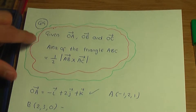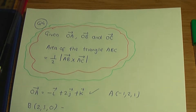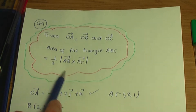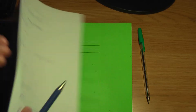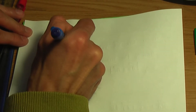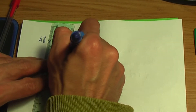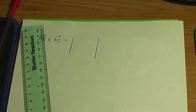Going back to our result, to work out the area of the triangle it's half the modulus of vector AB cross vector AC. Let me show you how to work out this cross product. The cross product can be found by considering the determinant of a 3 by 3 matrix. If you're unfamiliar with this concept, I have created a video explaining it and I'll provide the link in the description below.